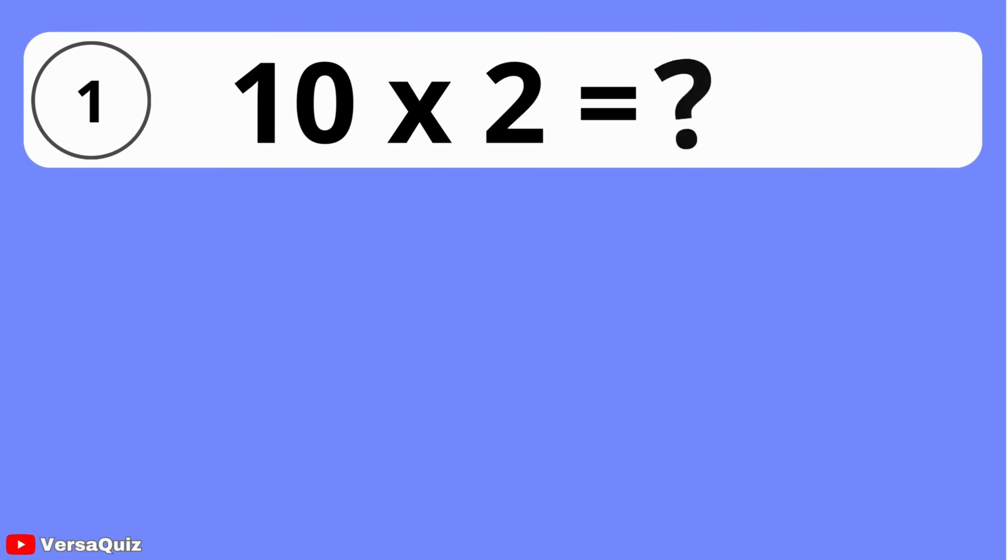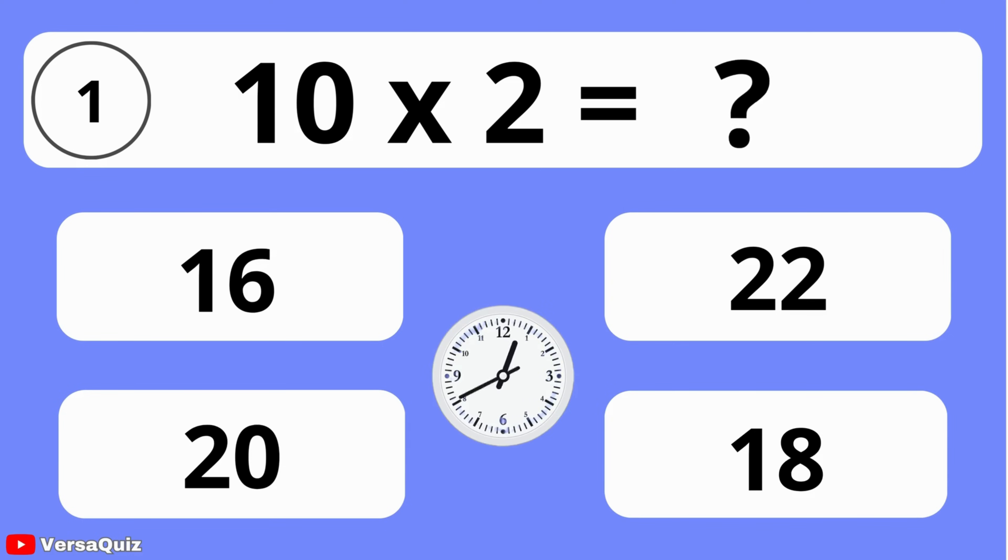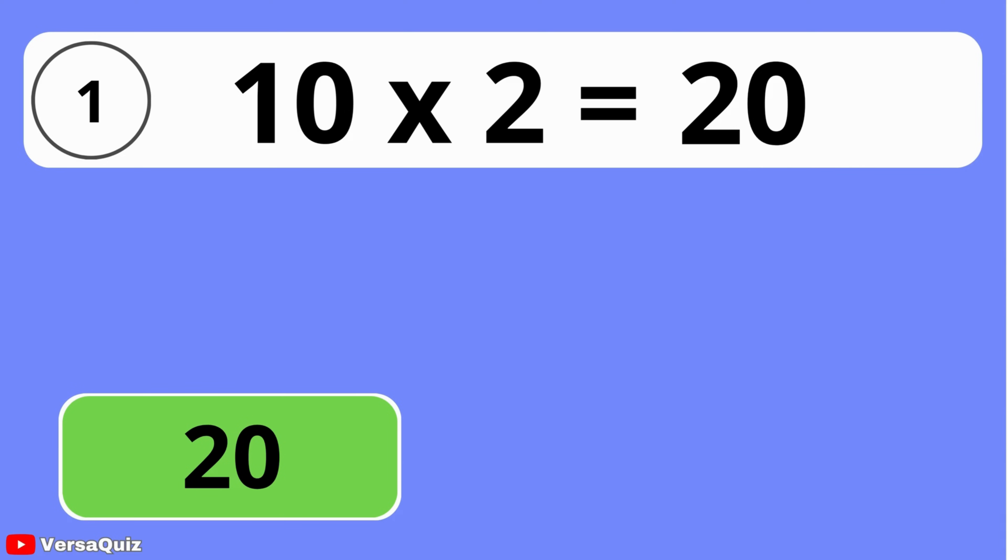What do you get when you multiply 10 by 2? 16, 22, 20, or 18? The answer is 20. Multiplying 10 by 2 gives you 20.